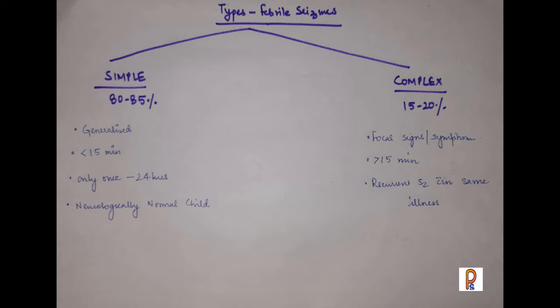When we say simple febrile seizures, it means the seizure is generalized, the duration is less than 15 minutes, and it occurs only one time within a febrile episode. This child is otherwise neurologically normal.